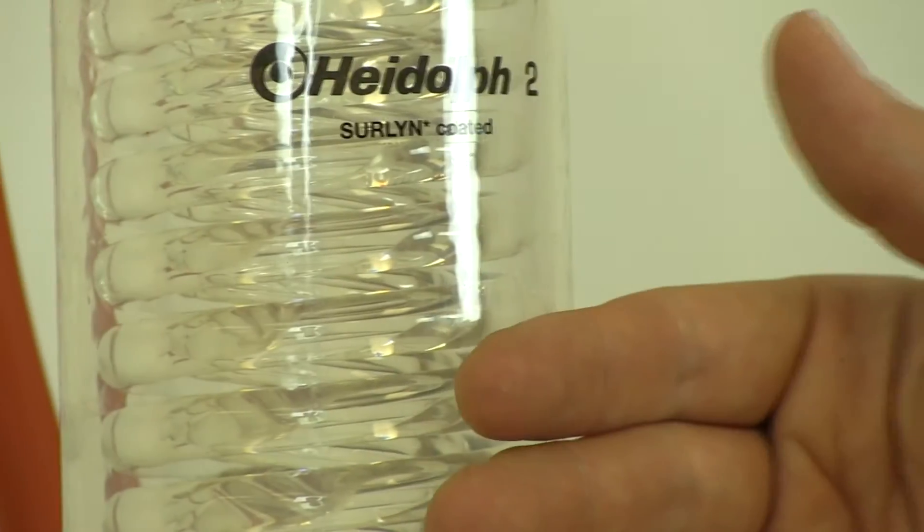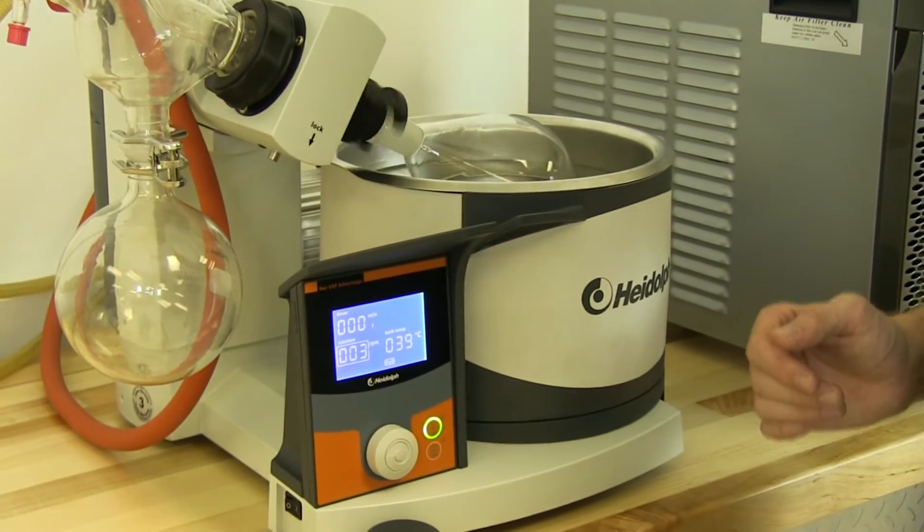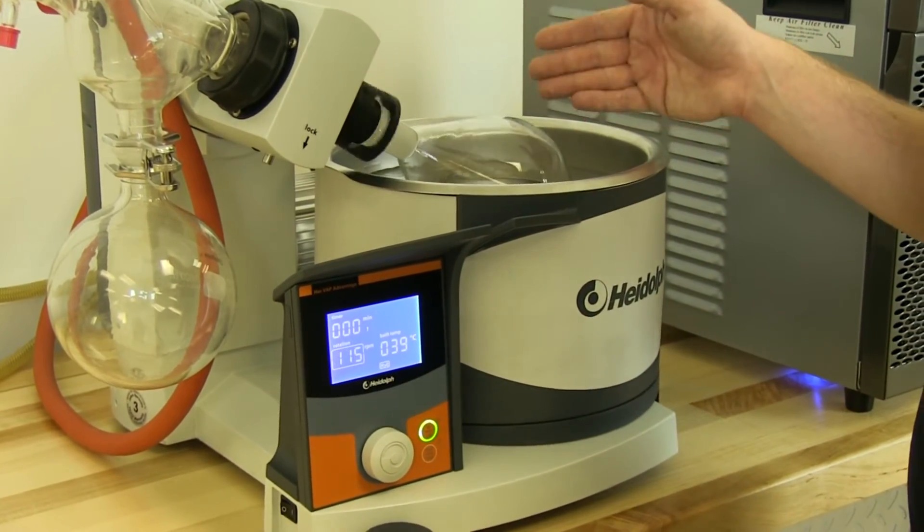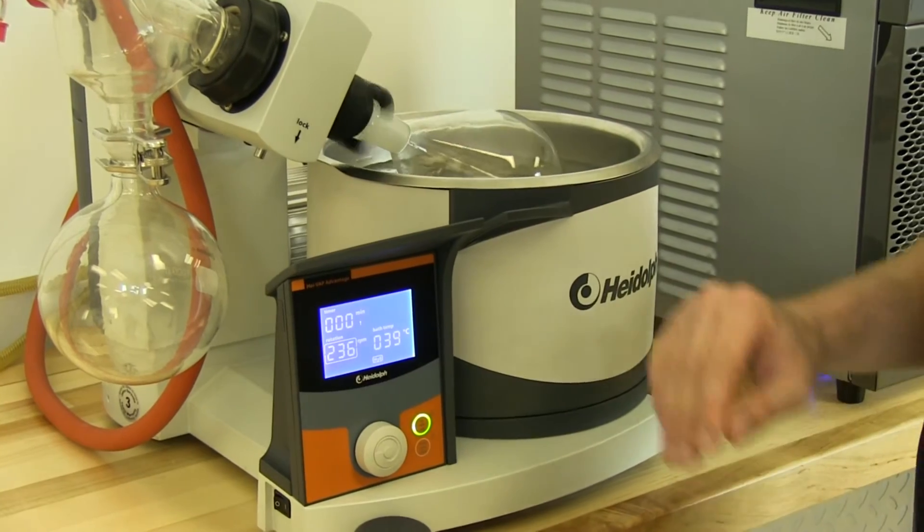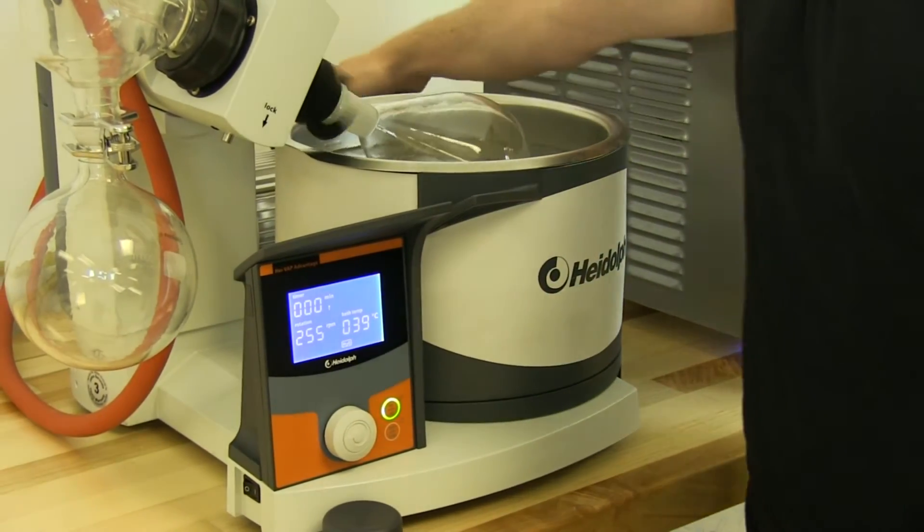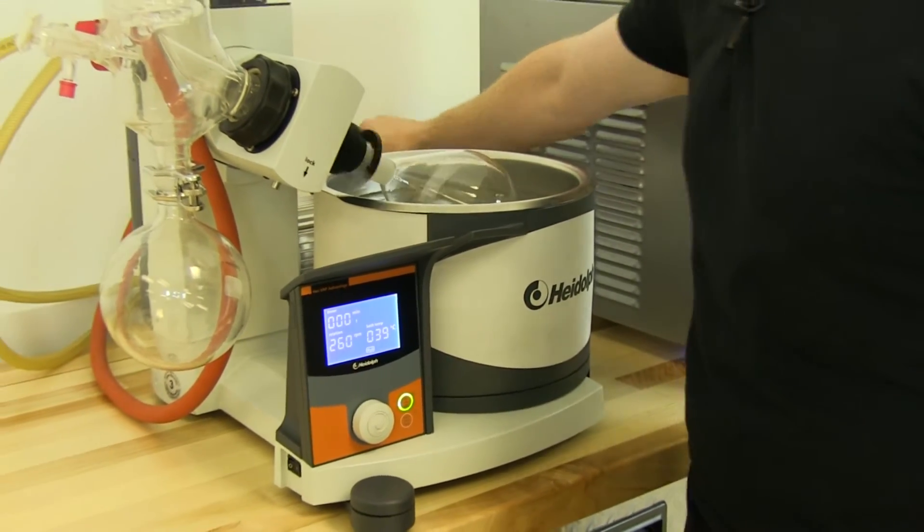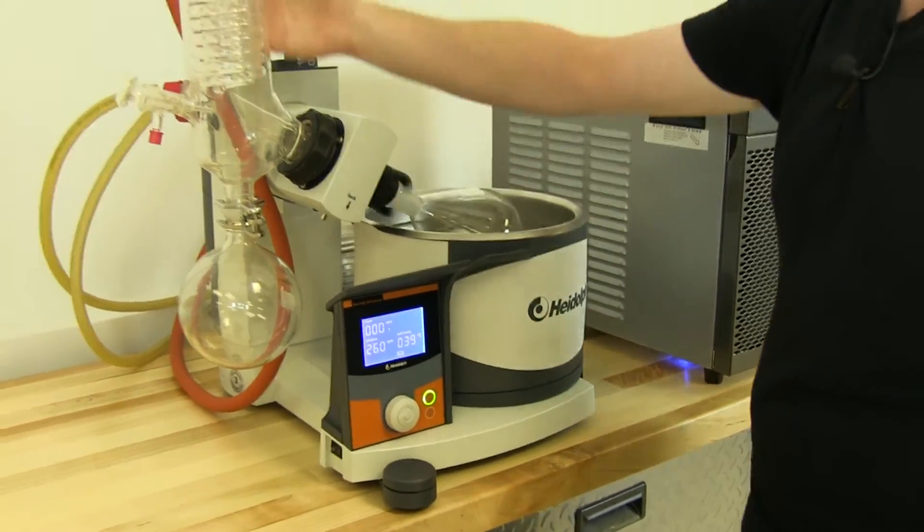Once we have reached our temperature in here, we can heat our bath. We can start rotation. We have this rotating at about 260 RPMs. Turn on our vacuum pump. Draw a vacuum on the entire system here.